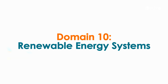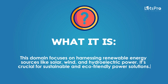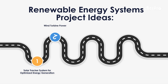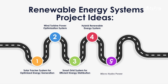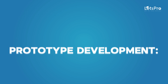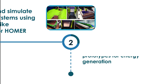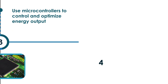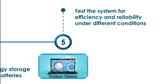Domain 10: Renewable Energy Systems. This domain focuses on harnessing renewable energy sources like solar, wind, and hydroelectric power. It's crucial for sustainable and eco-friendly power solutions. Project ideas include: solar tracker system for optimized energy generation, wind turbine power optimization system, smart grid system for efficient energy distribution, hybrid renewable energy system, and micro hydro power generation system. For prototypes, design and simulate energy systems using MATLAB or Homer, build small-scale prototypes, use microcontrollers to control and optimize energy output, integrate energy storage solutions like batteries, and test for efficiency and reliability.